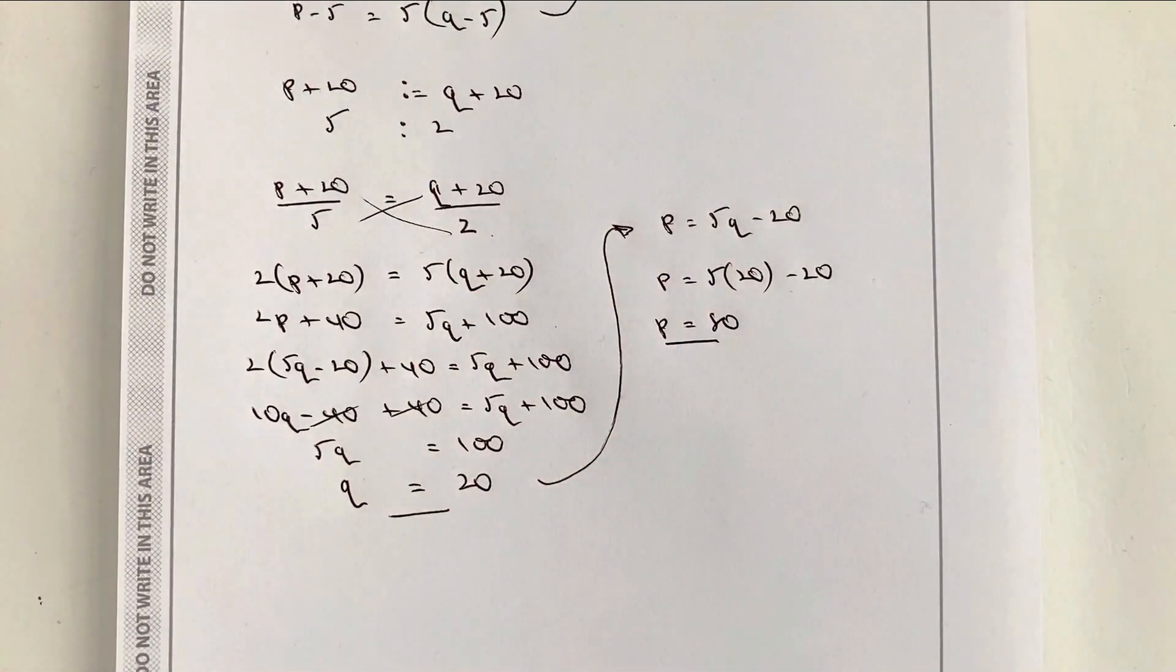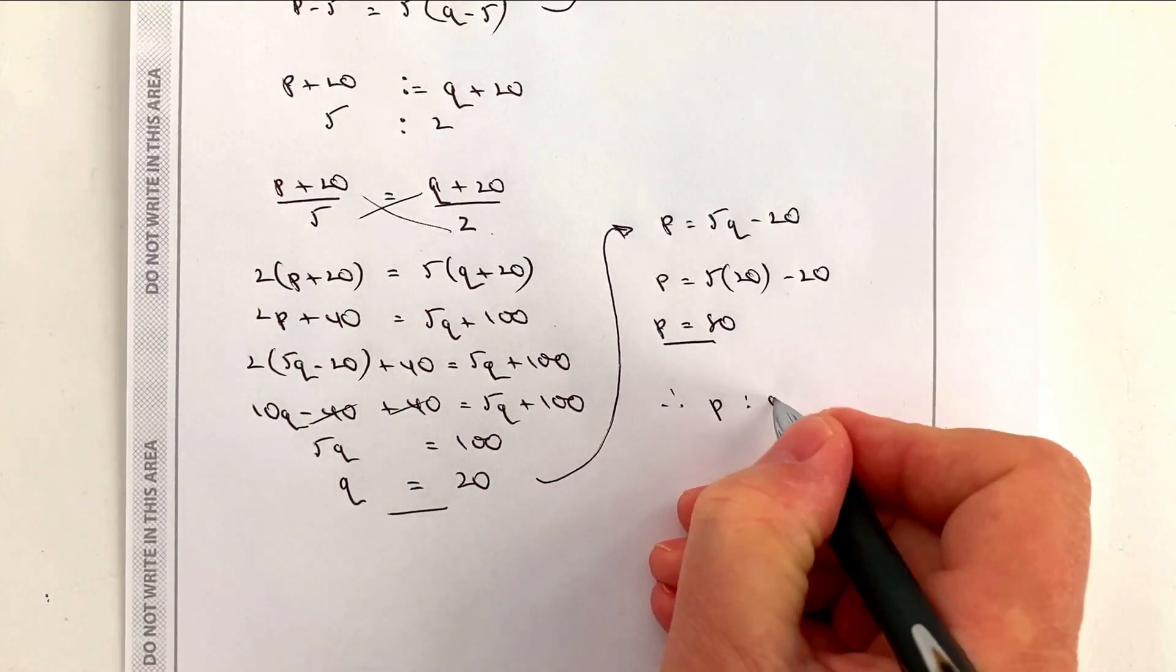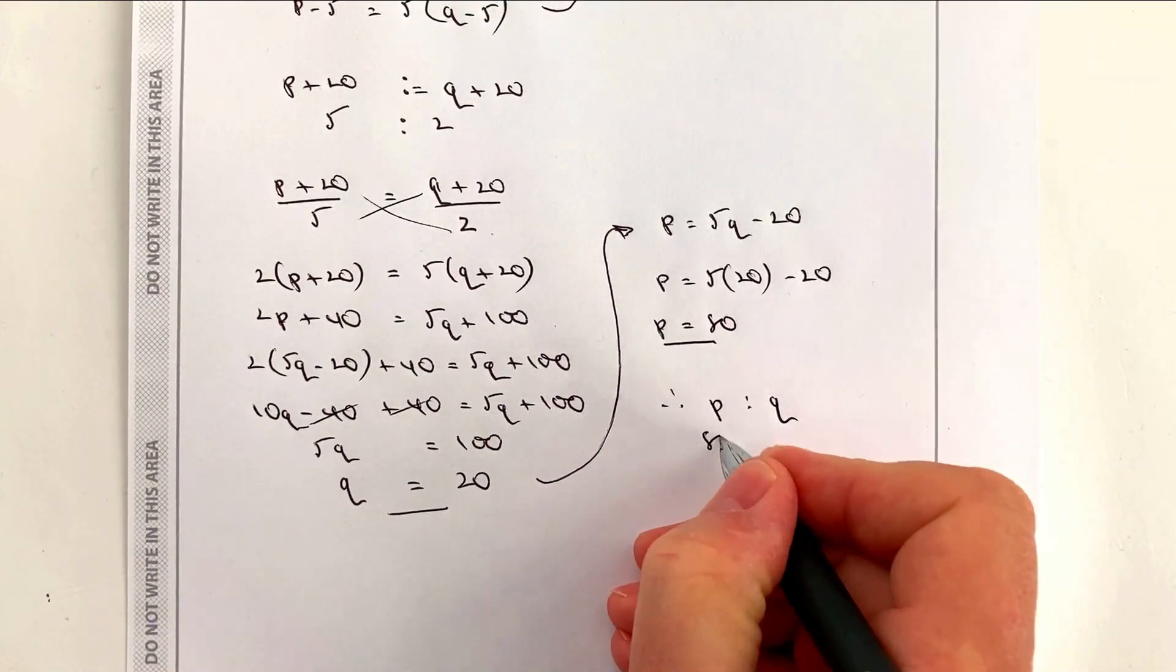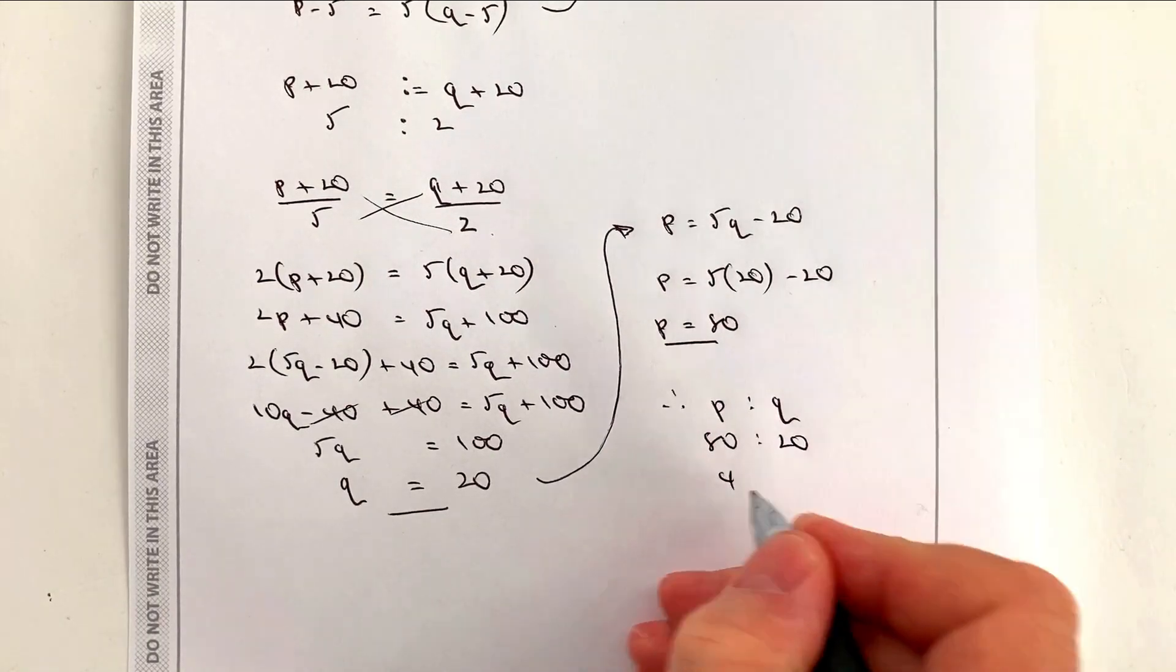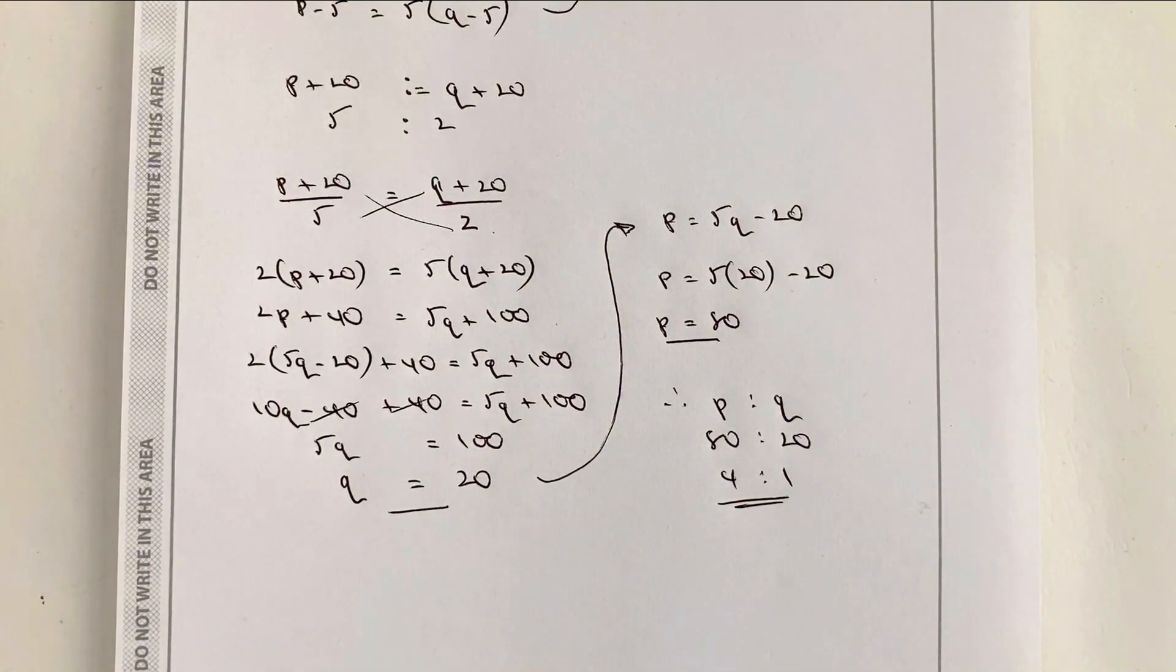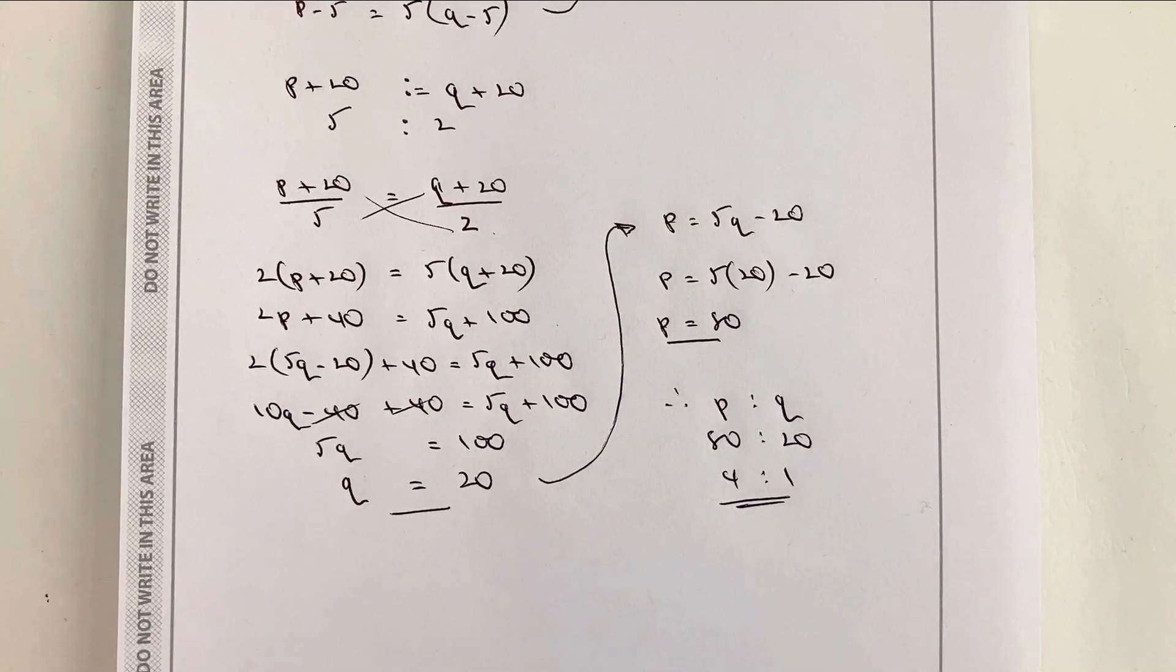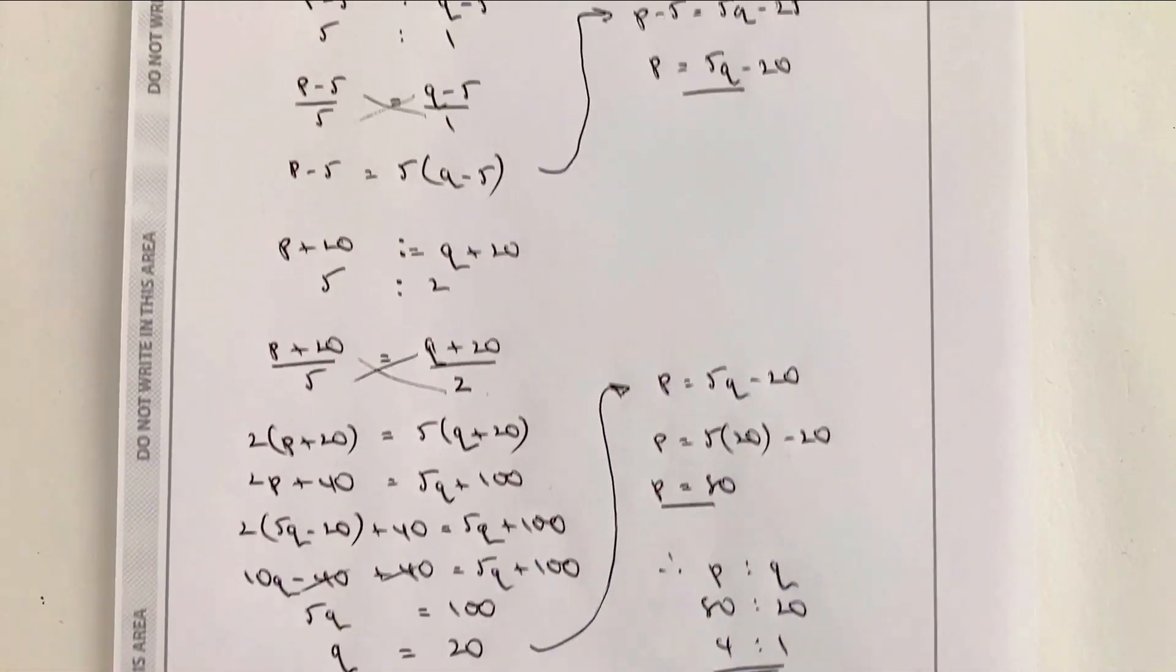And that actually is the answer to the question. I've got, therefore, the ratio of P to Q is going to be 80 to 20. And in its simplest form, that would be 4 to 1. And that would be the answer to this particular question. I'm smiling here. This has been great fun. Not really.